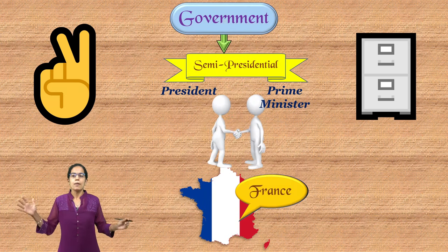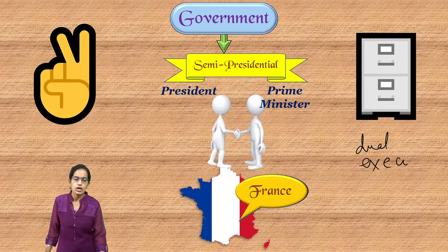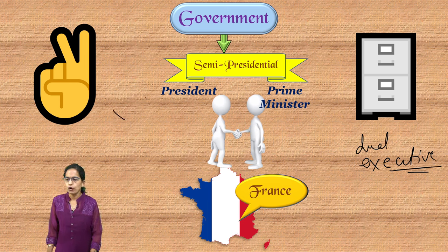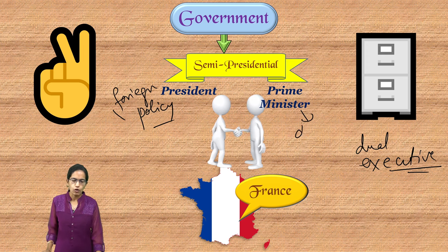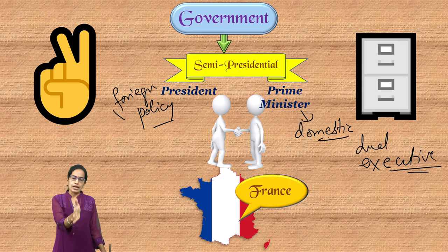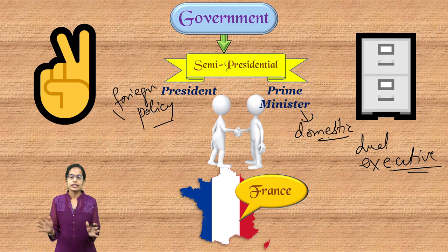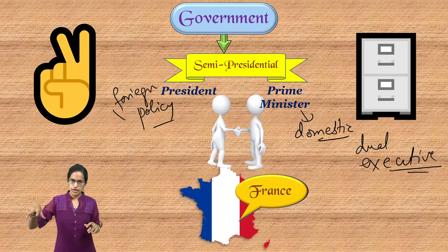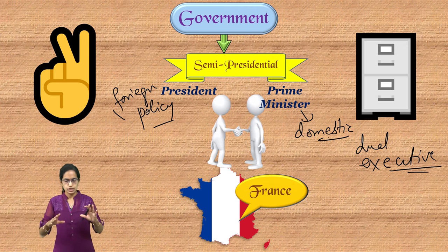In the semi-presidential form, both president and prime minister have dual responsibility, so we call it dual executive. A good example is France. The president takes care of foreign policy, defense, and foreign affairs, while the prime minister takes care of domestic affairs, internal affairs, and economic policies. The work is divided. The president is the head of state, the prime minister is the head of government, and collective responsibility is seen by the legislature.